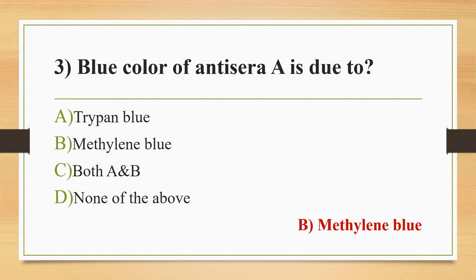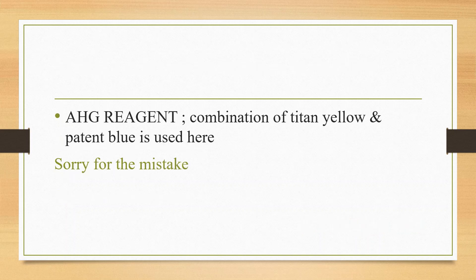In the case of anti-A, patent blue is used instead of methylene blue. In the case of anti-B, titan-yellow is used instead of acriflavine. Then for AB, the combination of titan-yellow and acriflavine is used instead of malachite green, which gives a green color.